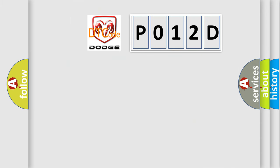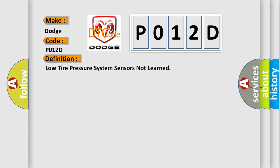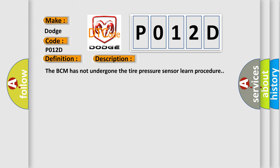So, what does the Diagnostic Trouble Code P012D interpret specifically for Dodge car manufacturers? The basic definition is: Low tire pressure system sensors not learned. This is a short description of this DTC code. The BCM has not undergone the tire pressure sensor learn procedure.